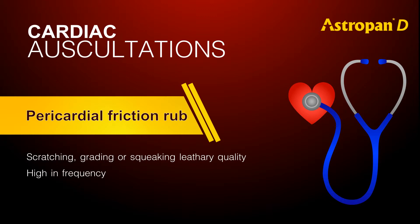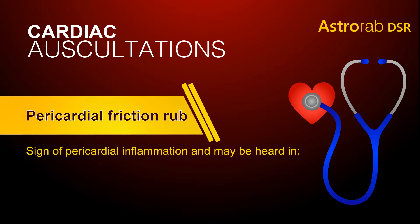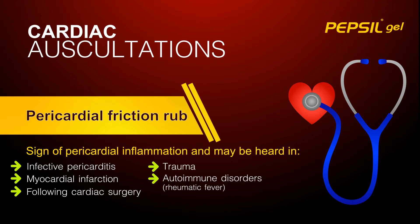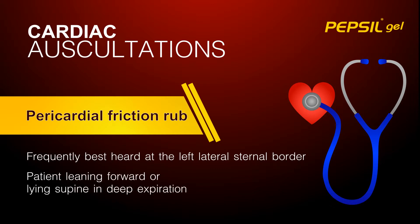It tends to be high in frequency and best heard with a diaphragm. A pericardial friction rub is a sign of pericardial inflammation and may be heard in infective pericarditis, in myocardial infarction, following cardiac surgery, trauma, and in autoimmune problems such as rheumatic fever. They are frequently best heard at the left lateral sternal border, with the patient leaning forward or lying supine in deep expiration.